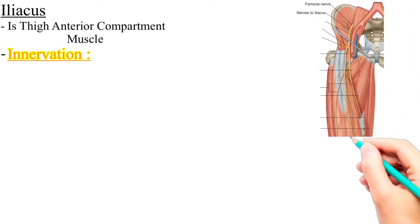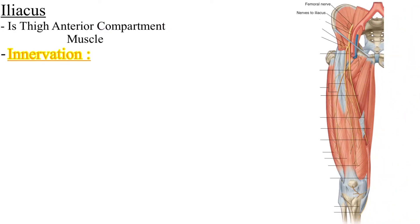Next is the innervation. The iliacus muscle is innervated by the femoral nerve.